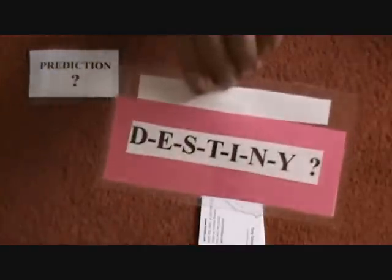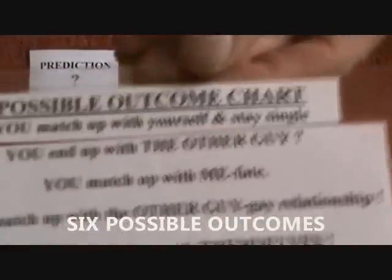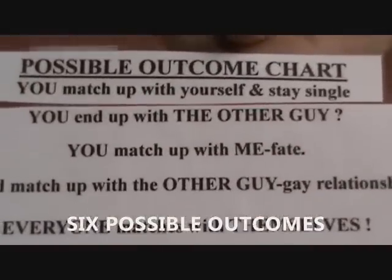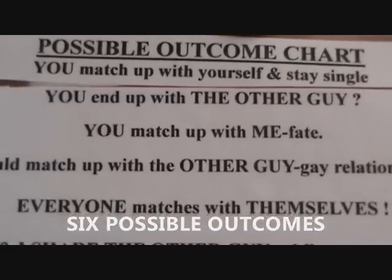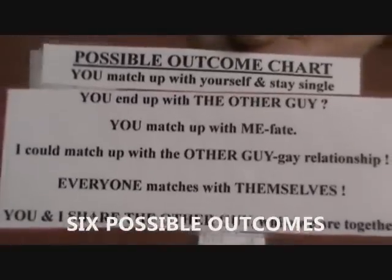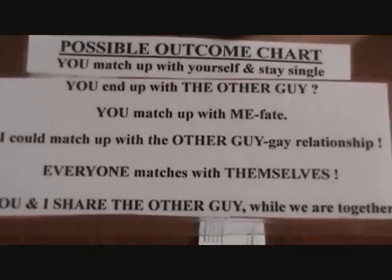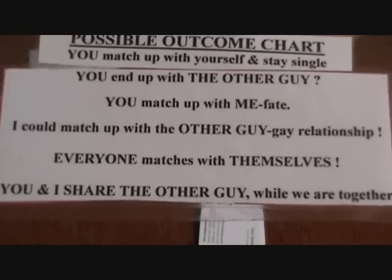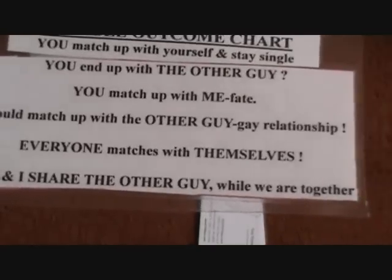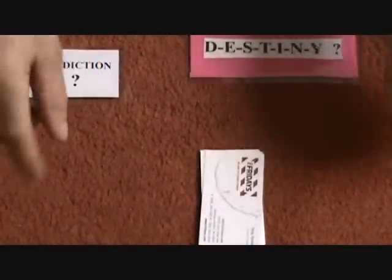Now you show them all the possible outcomes they could have. In a minute you're going to have them make a decision, but here's all the possible outcomes: you could match up with yourself, you could match up with the other guy, you could match up with me, I could end up with the other guy, everyone could match with themselves, or you and I could share the other guy and match up with ourselves. So there are six possible outcomes, so make sure they choose wisely.